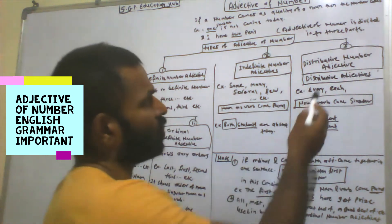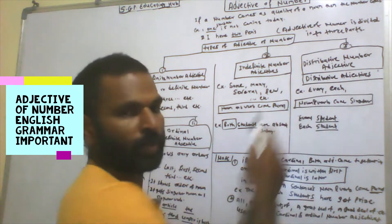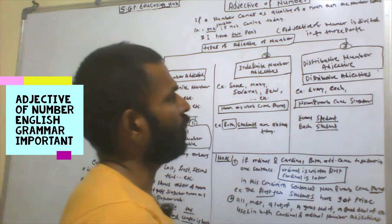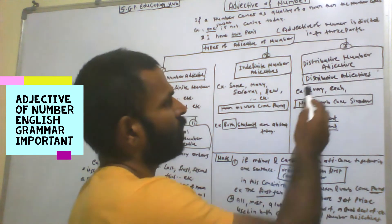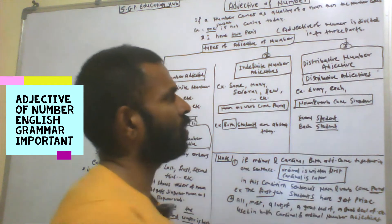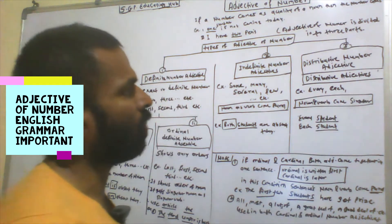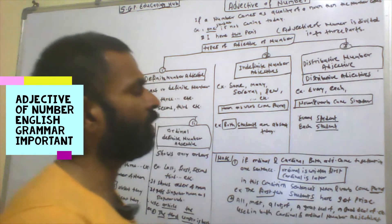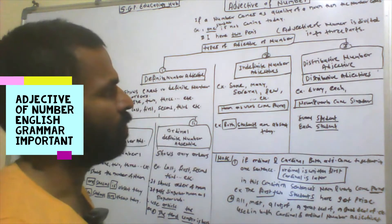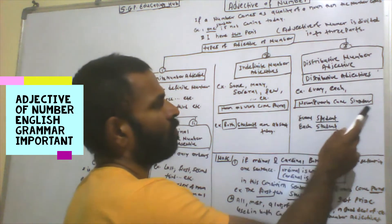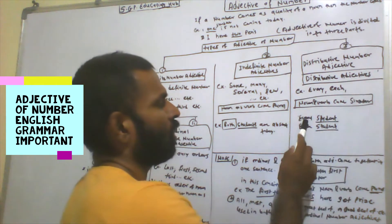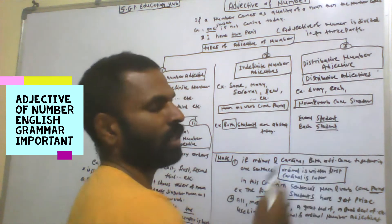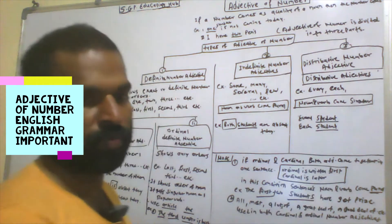The third type is distributive number adjective. Distributive number adjective shows distribution of numbers. Examples include: every, each. The noun and verb come in singular form. For example: 'Every student,' 'Each student' — the noun 'student' is in singular form.